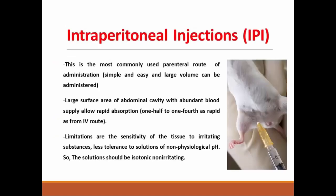Intraperitoneal injections. This is the most commonly used parenteral route in administration of substances in rat or mouse because it is simple, easy, and we can inject large volumes. The large surface area of the abdomen with abundant blood supply allows rapid absorption of solutions from this route, which is about one-half to one-fourth as rapid as from the intravenous route.